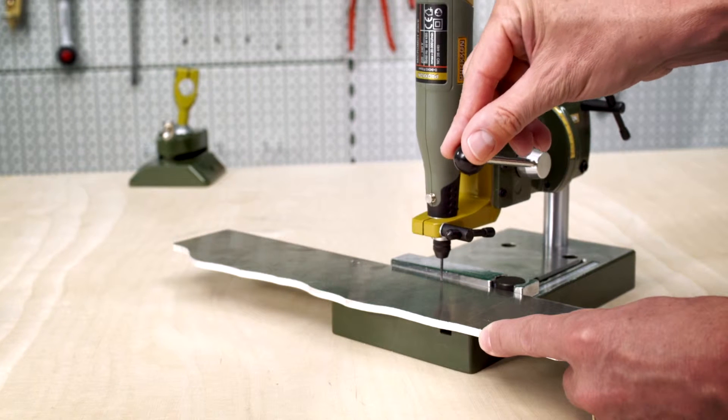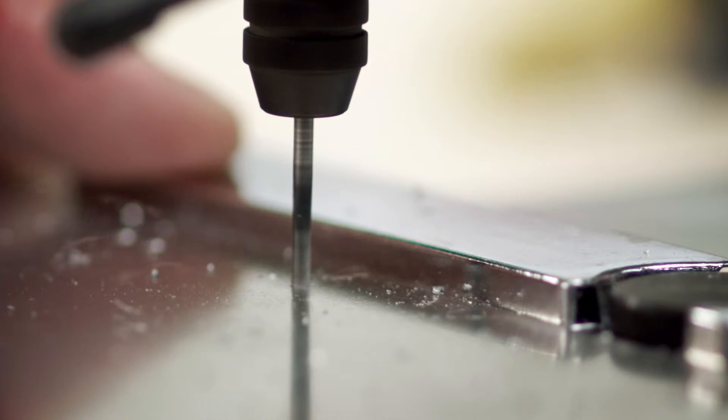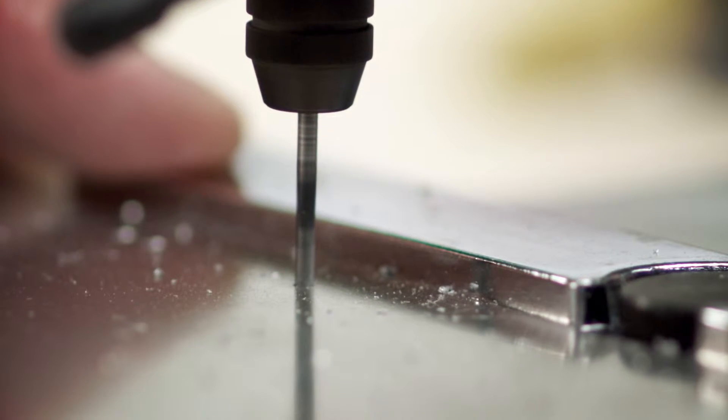With the 20 millimeter collar, the Micromot 230E can be used in our drill stand and in horizontal universal holders.